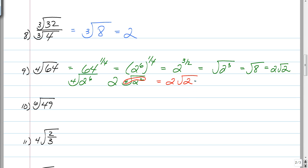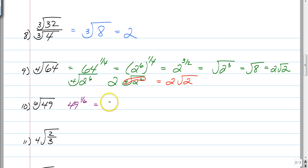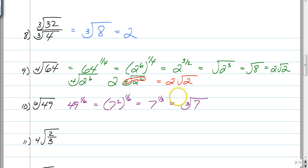There are always multiple ways to solve these questions. You've got to pick one that works for you and make sure your final answer makes sense. Number 10: the sixth root of 49. Rewrite as 49 to the 1 sixth. 49 is 7 squared, so that's 7 squared to the 1 sixth, which equals 7 to the 1 third, which is the cube root of 7 — because our answers must be in radical form.